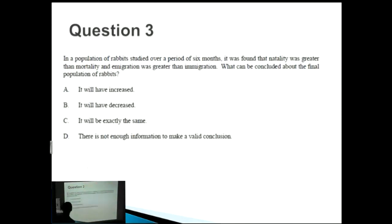In a population of rabbits studied over a period of six months, it was found that natality was greater than mortality, and emigration was greater than immigration. What can be concluded about the final population of rabbits? Key definitions you should note: natality, mortality, emigration, immigration.